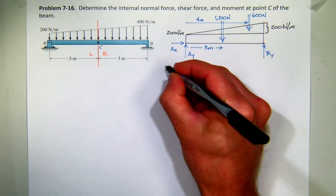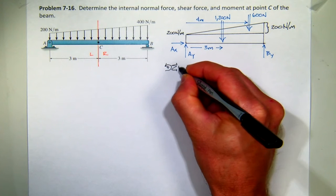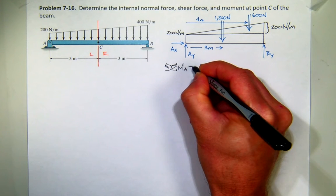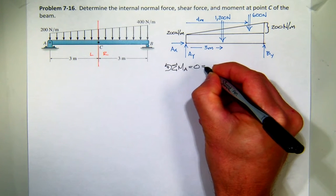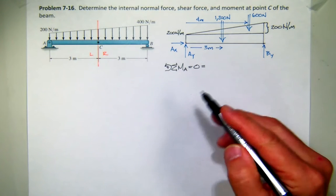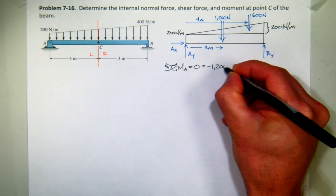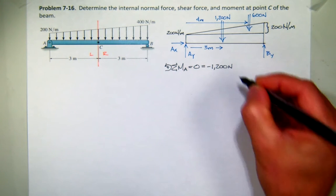So now I just sum moments about A. We've done that just a few times this semester. Make sure it's in equilibrium. So both my applied forces are going to create negative moments. So the first one will be 1,200 newtons.